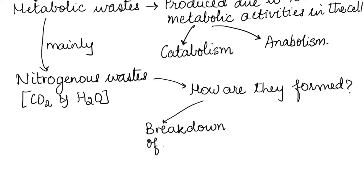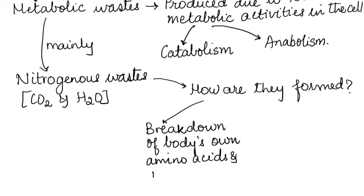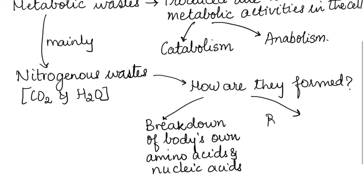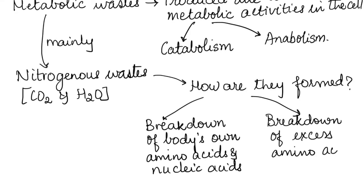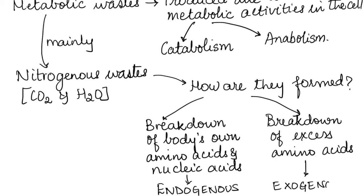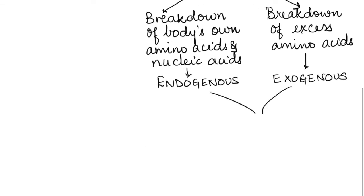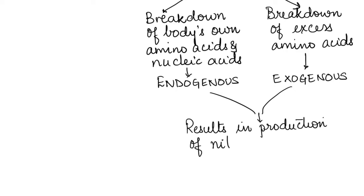So how are these nitrogenous wastes formed? These are basically formed in two ways: breaking down the body's own proteins and nucleic acids, or breaking down the excess of amino acids that has been consumed by the body. The process of breaking down the body's own proteins is called endogenous and the other process is called exogenous. Both processes result in production of nitrogenous wastes.